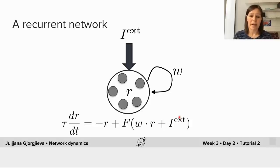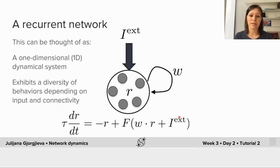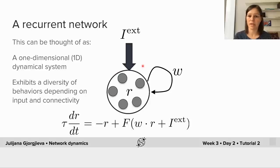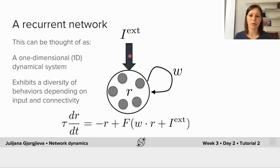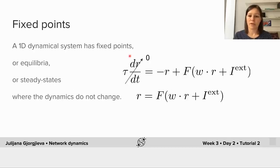To understand the dynamics of these recurrent networks, which depend on both the recurrent connectivity strength and the external input, we use the mathematical framework of dynamical systems — specifically a one-dimensional dynamical system, since we have a single population of neurons with similar computational properties. We will investigate the diversity of behaviors such a network can generate as a function of connectivity strength and external input.